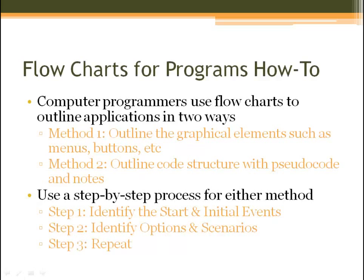Flowcharts for programs: computer programmers use flowcharts to outline their applications. Method 1 outlines the graphical elements such as menus and buttons, while Method 2 outlines the code structure with pseudocode and notes. We can use a step-by-step process for either method: Step 1, identify the start and initial events; Step 2, identify the options and scenarios; and Step 3, repeat the process until the entire program is outlined.